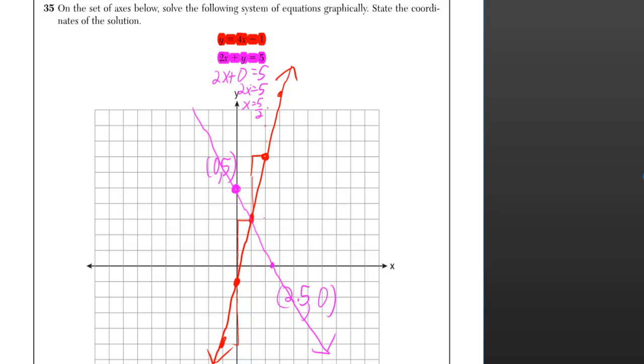And I can easily see my intersection point is over by 1 and up by 1, 2, 3. So I'll put that the intersection is 1 comma 3.